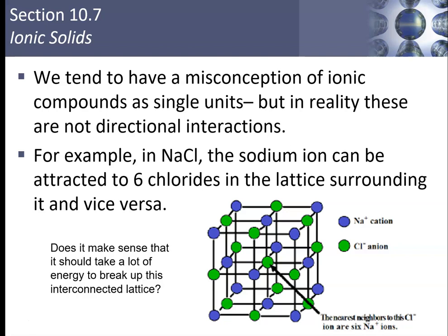So there's not just one attraction holding this lattice together — there are six attractions per each one of these ions. If you think about that, it should make sense that it takes a lot of energy to break up this lattice. I'm not just breaking apart one sodium-chloride attraction; to separate one sodium ion, I have to break the attraction to six chlorides, and each chloride must be broken apart from up to six sodiums. That's why it has such a very high melting point.